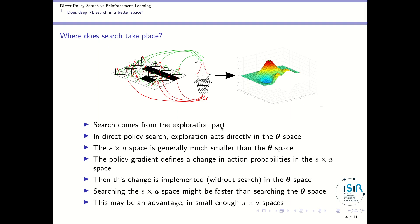Search comes from the exploration part. In direct policy search, you explore directly in the space of policy parameters — you sample different policy parameters and move directly in this landscape. In the policy gradient case, we change actions in states, which results in changing the theta parameter. So exploration takes place in the state-action space. The policy gradient defines the change in action probabilities in the state-action space, and this change is implemented without any search in the policy parameter space.